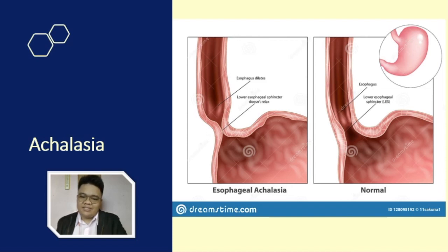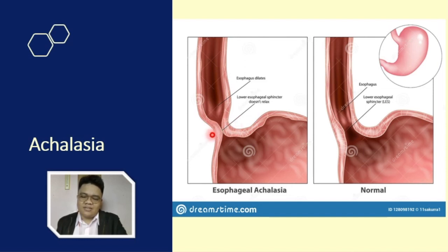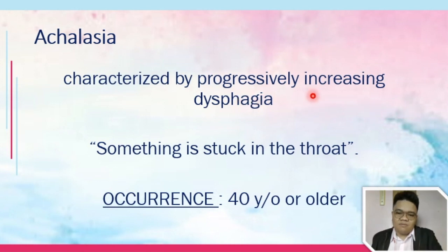The problem in achalasia is that it is a disorder characterized by progressive increasing dysphagia. This dysphagia occurs because there is absent or ineffective peristalsis to the distal esophagus, and there is a failure of the LES to relax. When food passes through, instead of the LES opening, it keeps closing. So there is narrowing of the esophagus above the stomach, and there will be gradual dilation of the upper chest esophagus, becoming progressively worse over time.